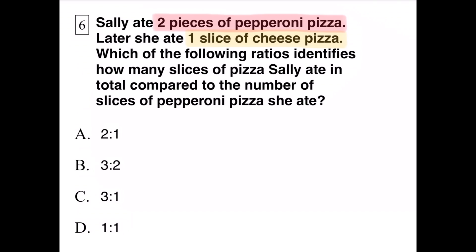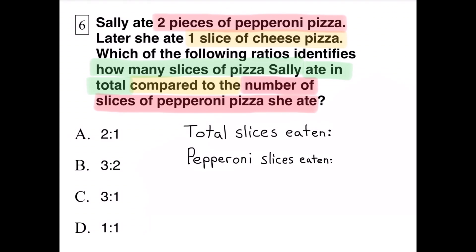They're asking us to identify how many slices of pizza Sally ate in total compared to the number of slices of pepperoni pizza she ate. So I need to write down the total number of slices eaten and the total number of pepperoni slices eaten. The total number of slices eaten is two pepperoni slices plus one cheese slice.